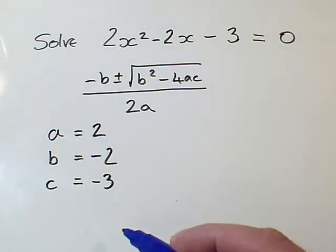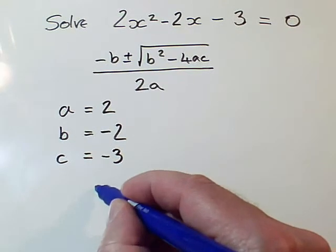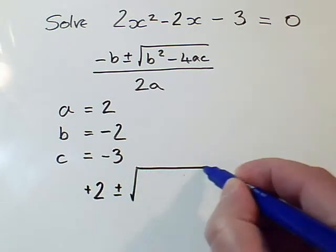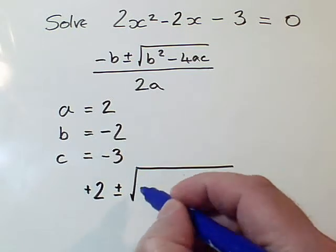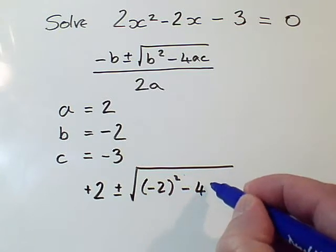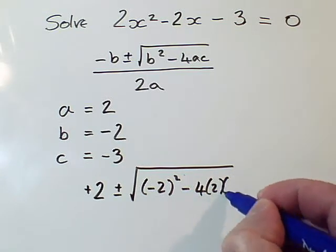Putting the values in, we get minus b is plus 2, plus or minus the square root of b squared is minus 2 squared, minus 4 times a times c.